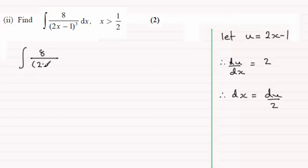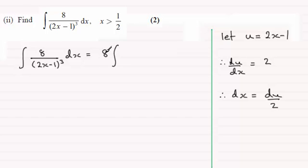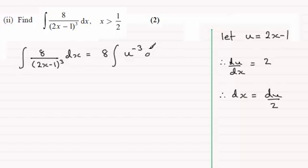We can now build our integral by changing the variable. The integral is 8 over (2x minus 1) cubed with respect to x. We pull out the 8 as a constant, leaving 1 over (2x minus 1)^3, which is u to the power minus 3, multiplied by dx which is du over 2. The 2 cancels into the 8, leaving 4.